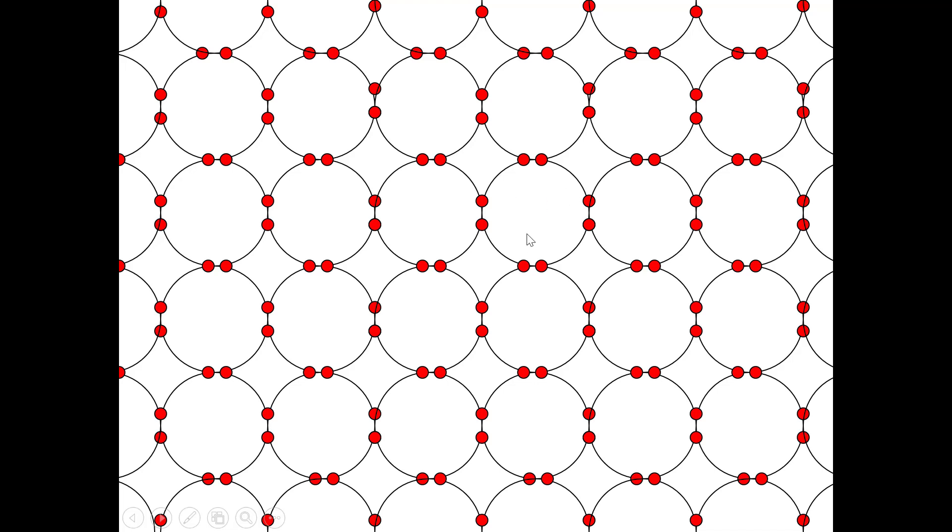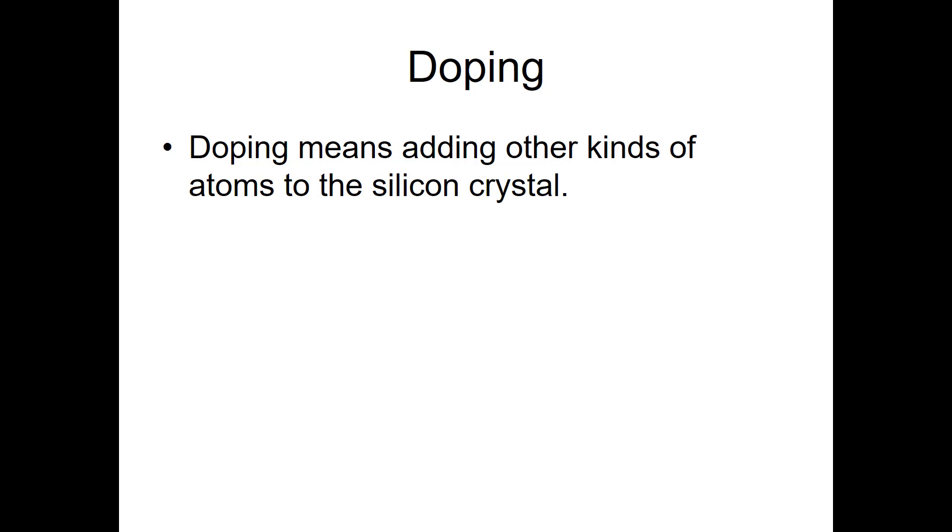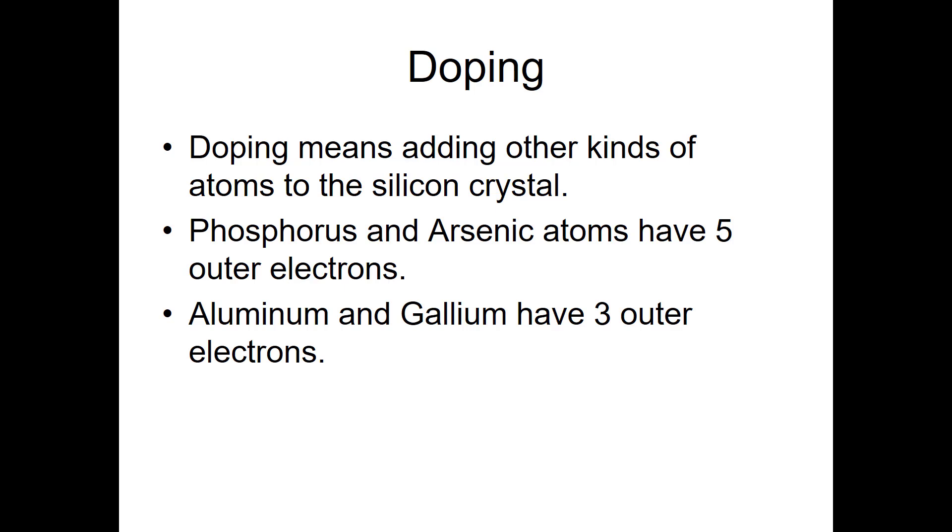If you look at it, that's the case with every silicon atom in this matrix, in this crystal. Now doping is what allows silicon to become a semiconductor. Doping means adding some other kinds of atoms to the silicon crystal matrix. Often phosphorus and arsenic are used. They each have five outer electrons. Aluminum and gallium have three outer electrons. Doping makes the crystal able to conduct electricity.